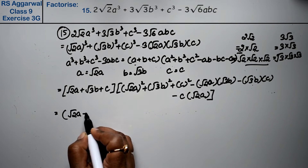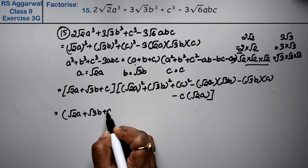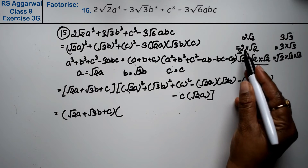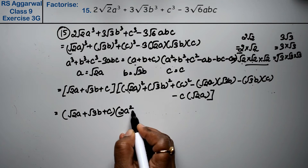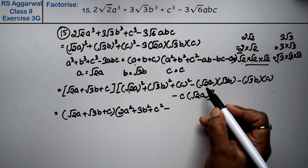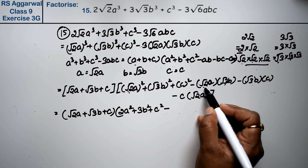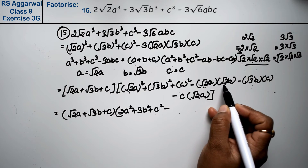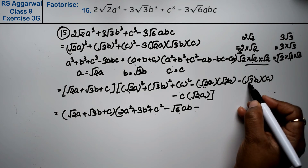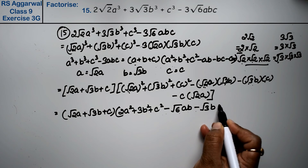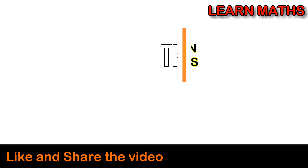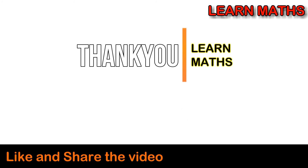Opening the bracket: (√2·a + √3·b + c) multiplied by — √2·√2 = 2, so 2a²; √3·√3 = 3, so 3b²; plus c²; minus √2·√3 = √6, so √6·ab; minus √3·bc; minus √2·ac. This is the final answer.